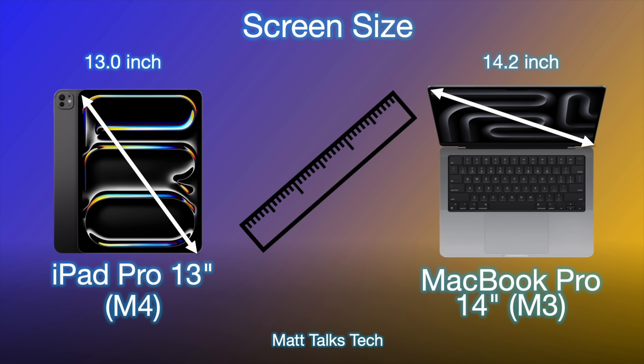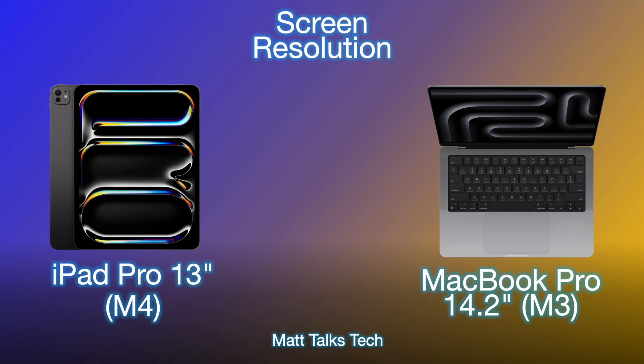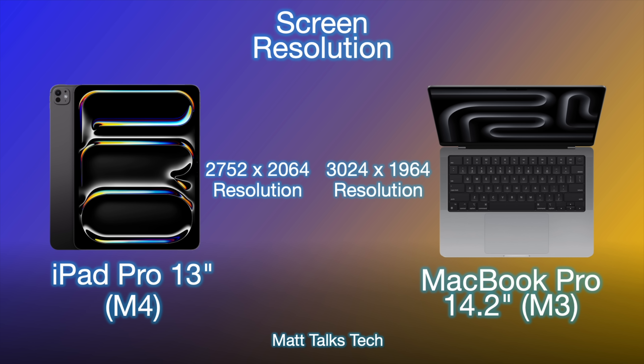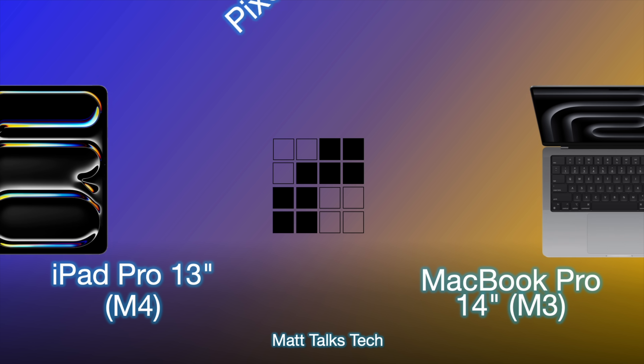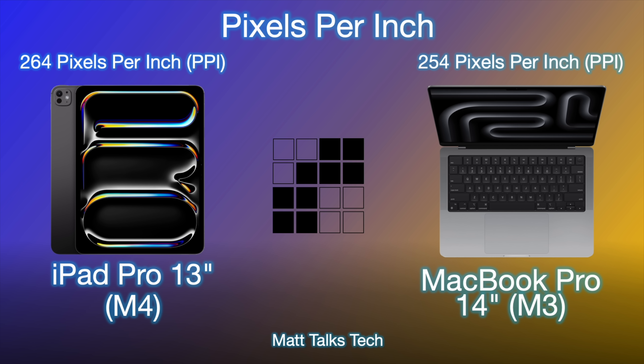For screen size, Apple increased the iPad Pro by 0.1 of an inch up to 13 inches, whereas the MacBook Pro has a 14.2-inch display — just over an inch bigger. In terms of resolution, the iPad Pro 13-inch has 2752 by 2064, whereas the MacBook Pro 14.2-inch has 3024 by 1964. That works out to 264 pixels per inch versus 254 pixels per inch on the MacBook Pro.